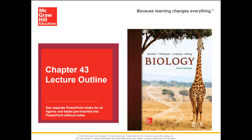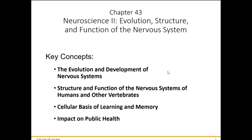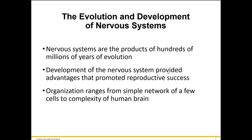Chapter 43 is all about the nervous system — not just neurons but how the nervous system is organized. We'll cover the evolution, structure, and function of the nervous system. The four sections are: evolution and development of nervous systems, structure and function in humans and other vertebrates, the cellular basis of learning and memory, and the impact on public health. Nervous systems are a product of years of evolution, giving advantages and promoting reproductive success.